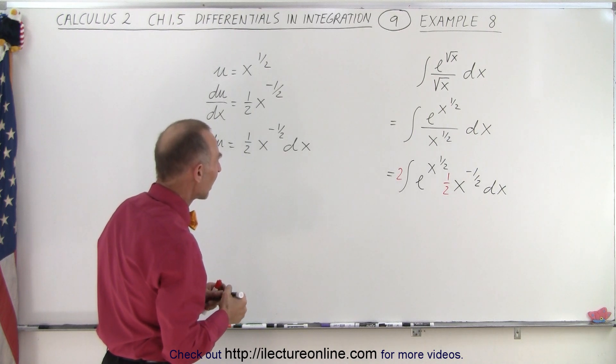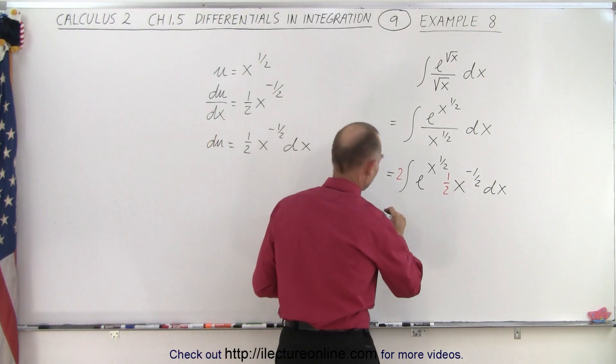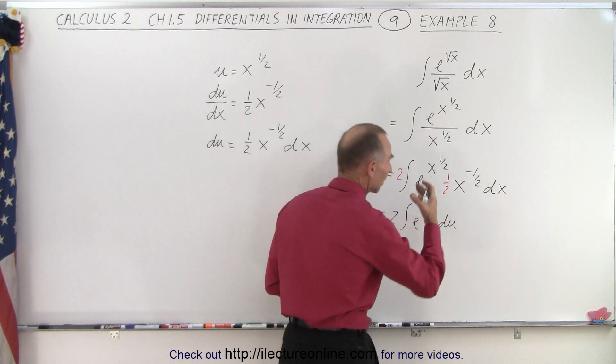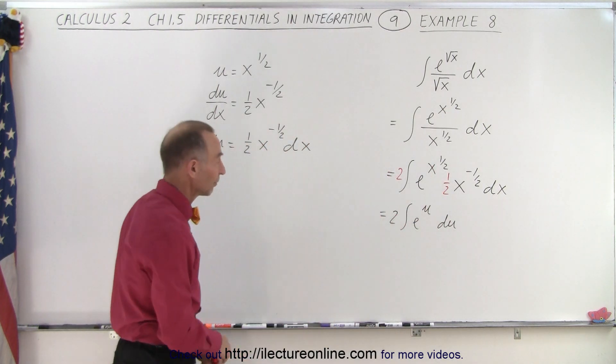Okay, now that we've done that, I have the same as 2 times the integral of e to the u times du. And of course, the integral of that is simply e to the u plus a constant of integration. We can say this equals 2 times e to the u plus a constant of integration.